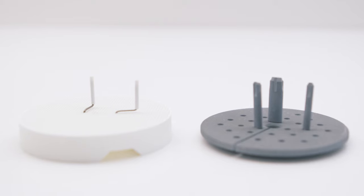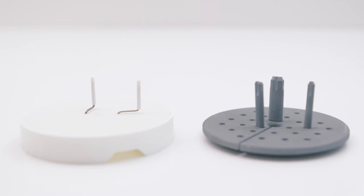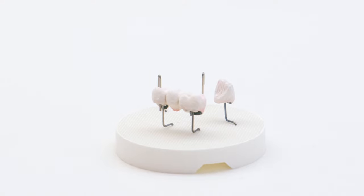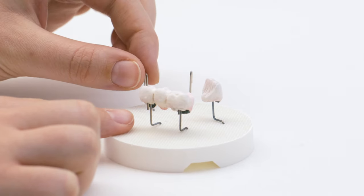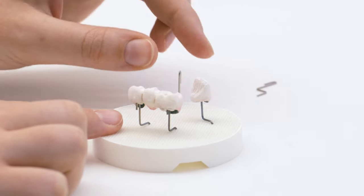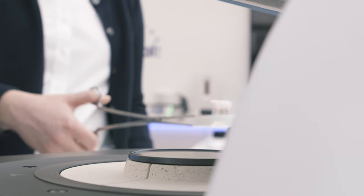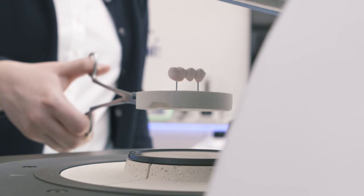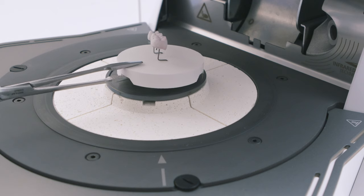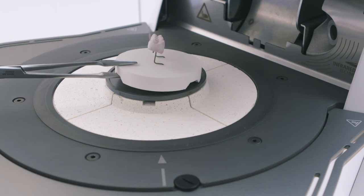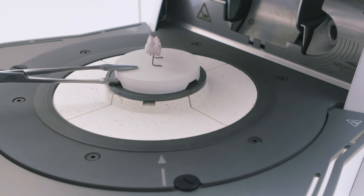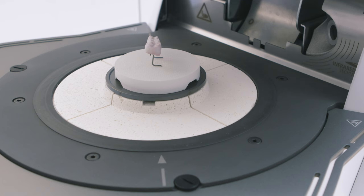Only use the Programat firing trays recommended by Ivoclar for the respective material. Unused firing pins or fan pins should be removed from the firing tray if possible. Position the objects in such a way that the infrared camera has a wide view of the objects. Use the markings on the frame plate as a reference.